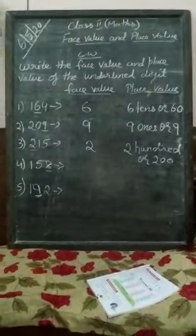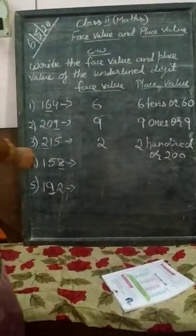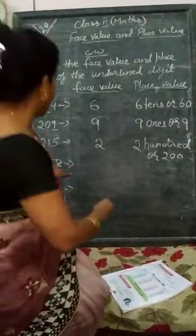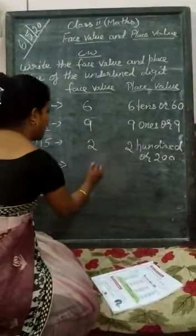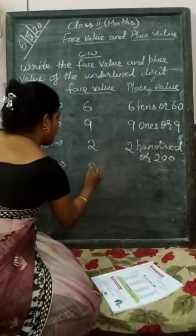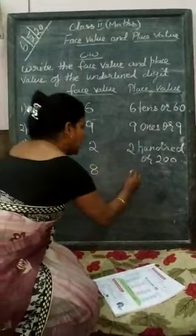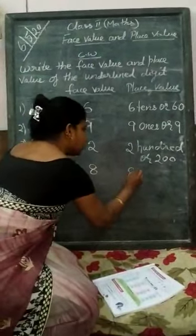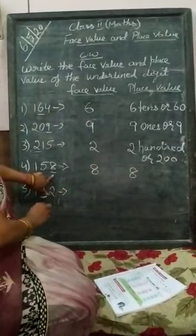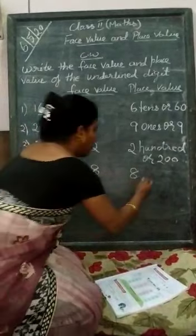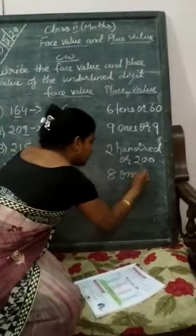So, what is your face value? What is your face value? How do we write it? The face value of 8 is simply 8 — it stays as it is.